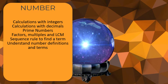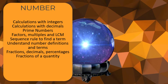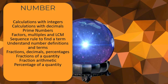Understand number definitions and terms: knowing properties of numbers — odd, even, square, cube, primes — being able to recognise numbers that belong to certain categories. Fractions, decimals and percentages: being able to switch between them. Finding a fraction of a quantity — for example, what is three-fifths of a hundred? Fraction arithmetic: make sure you know how to use the fraction button on your calculator for normal fractions, mixed numbers and changing between formats. Percentage of a quantity: use multipliers on this calculator paper rather than breaking percentages into parts.